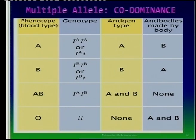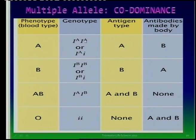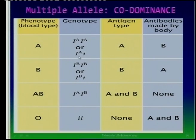In the phenotype we have four blood groups: A, B, AB, and O. If you look at the genotypes, we actually have three alleles: a dominant A, a dominant B, and a recessive. Blood group A can be homozygous (IA IA) or heterozygous (IA i). Blood group B can similarly be homozygous (IB IB) or heterozygous (IB i).